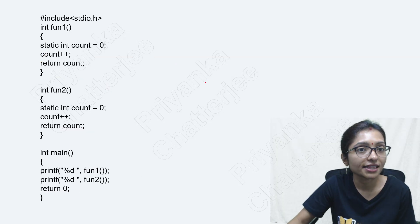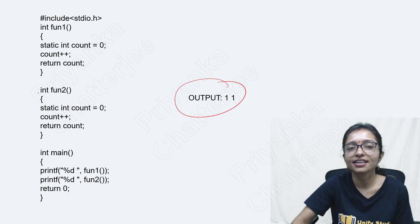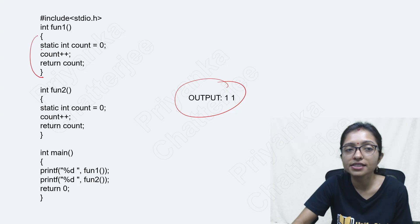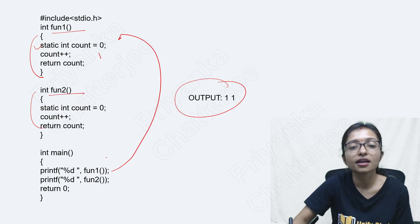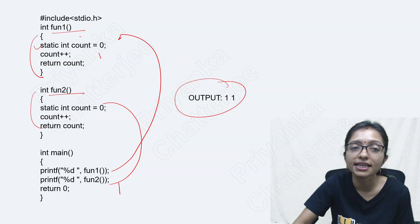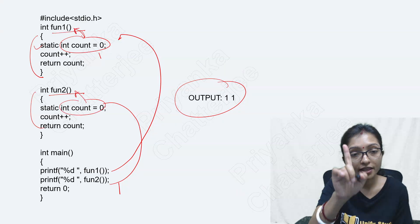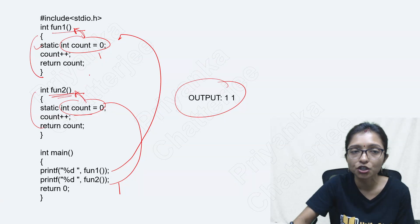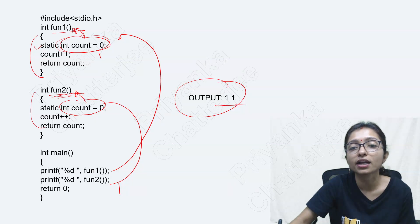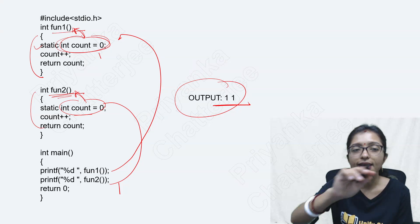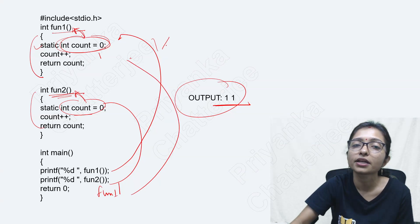Now for this question: the answer is 1 and 1. Why? Because this is the static variable for function 1, and this is the static variable for function 2. You are calling function 1 so you are getting 1 here. You are calling function 2 and also getting 1 here. This count is the variable for function 1 and that count is the variable for function 2 — they are not the same. The scope of this count is within function 2, and the scope of this count is within function 1. Although the name is same, the scope is different. That's why you are getting 1 and 1. If again you call function 1, then 1 will be updated to 2.